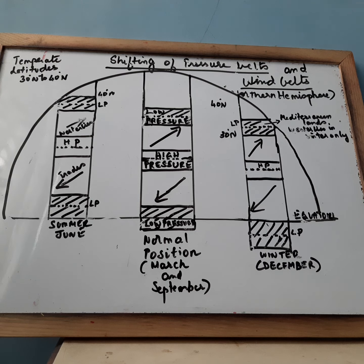Shifting of pressure belts is responsible for seasonal changes. The shifting is either southwards or northwards with the overhead position of the sun. The reasons for the shifting are mainly inclination of earth's axis and difference in heating of oceans and continents.